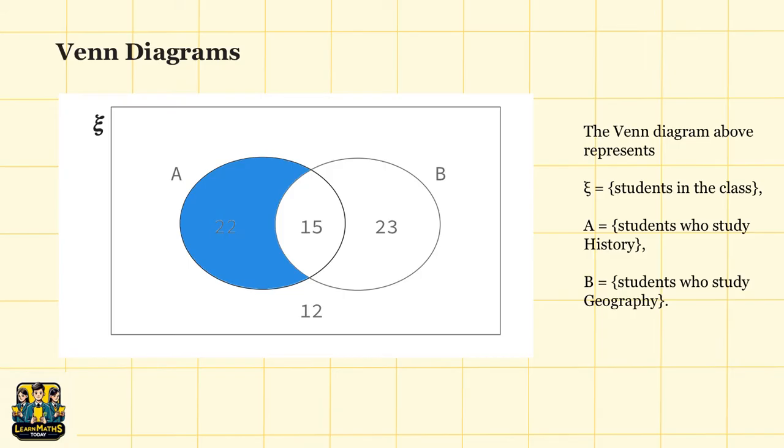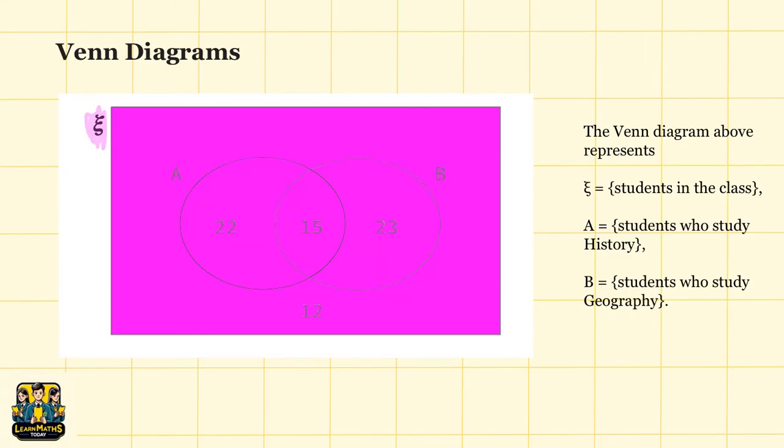Lastly, you have the universal set, which is the rectangle or space around the circles representing the universal set. This includes all possible elements under consideration in that context.